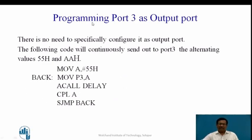Here we will see how Port 3 can be configured as an output port. Since there is no need to specifically configure it as an output port, we skip those two configuration instructions. The following code continuously sends out to Port 3 the alternating values 55H and AAH. First 55H is moved into the accumulator, sent to Port 3, then after some delay the accumulator is complemented to AAH and the loop repeats.